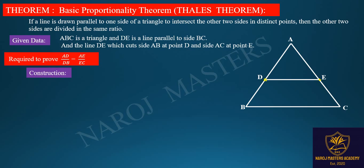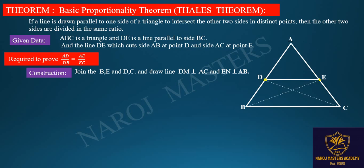For the construction, to prove that, first join the lines BE and DC. Then draw a line DM perpendicular to AC, and a line EN perpendicular to AB.